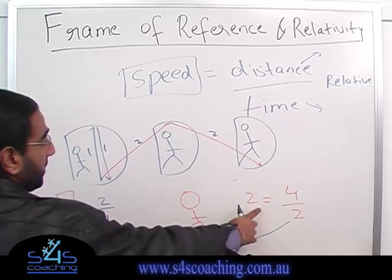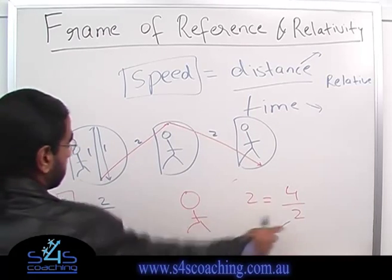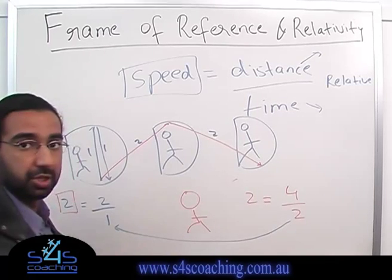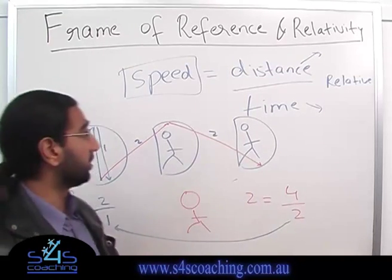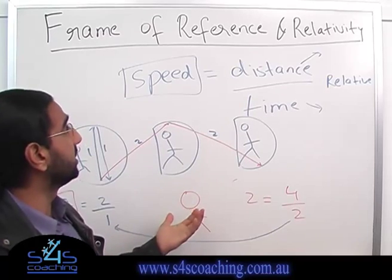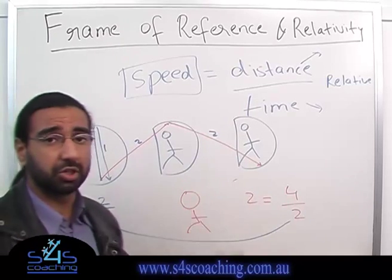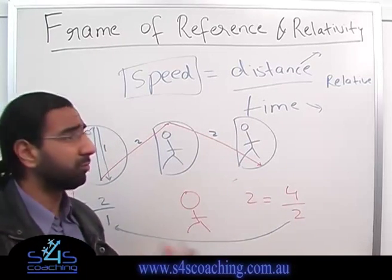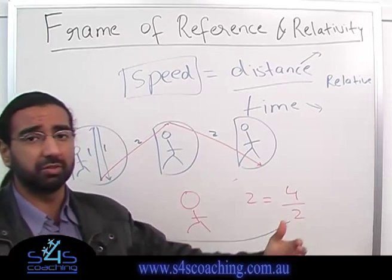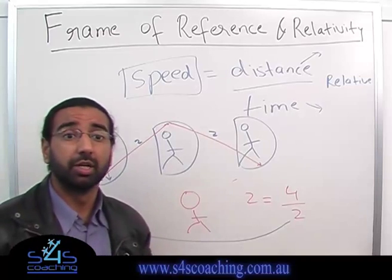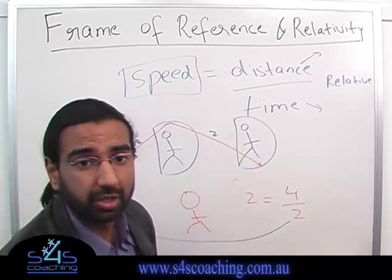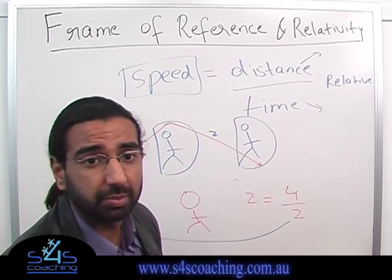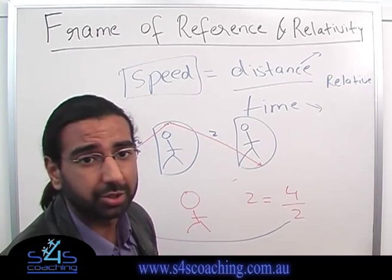So to make the speed the same, the time has to change. This is in fact true. One of the consequences of Einstein's theory of relativity is that time for a moving observer will actually slow down. This concept is called time dilation.